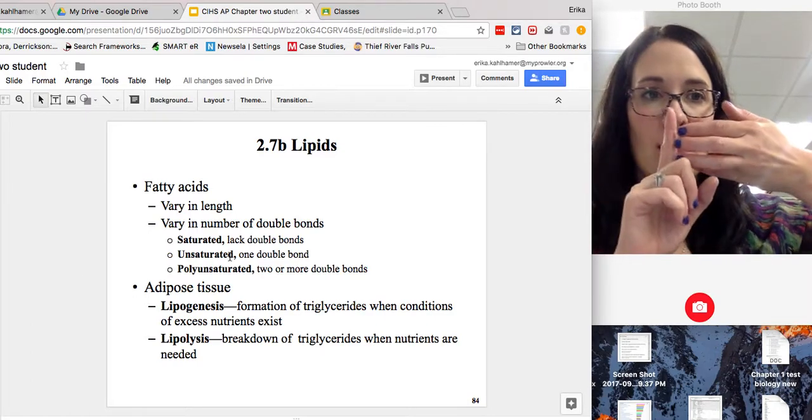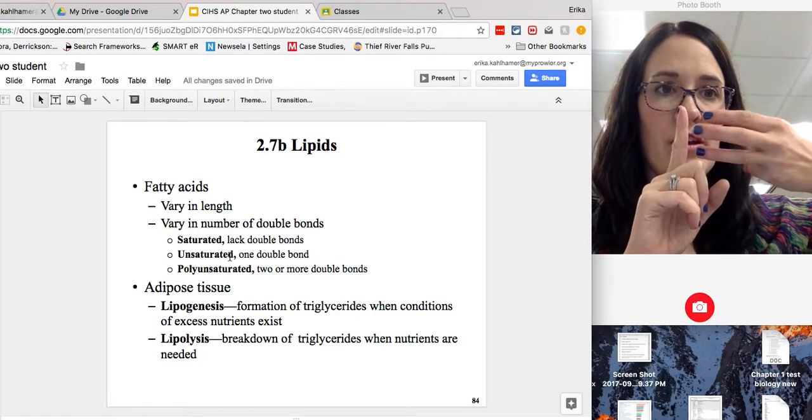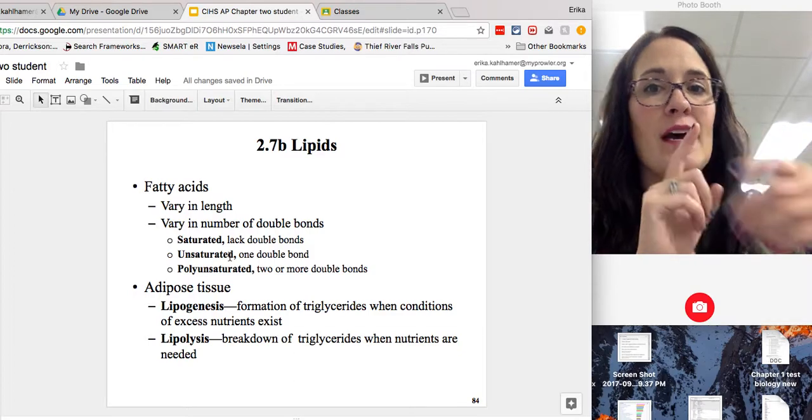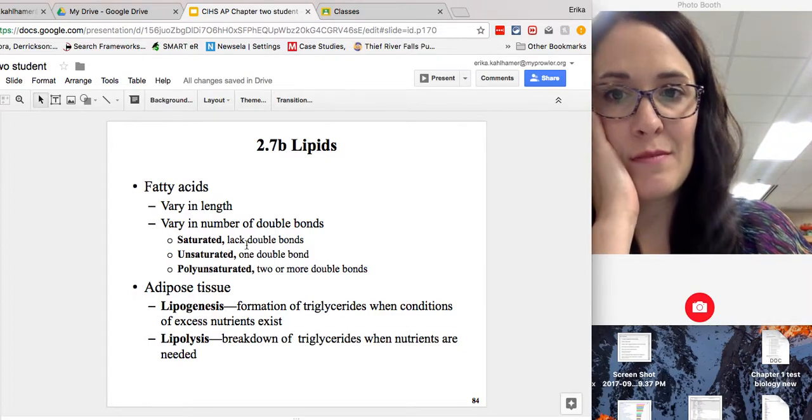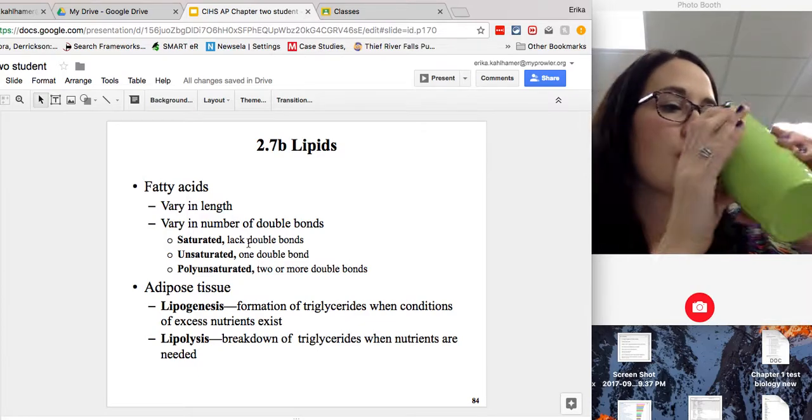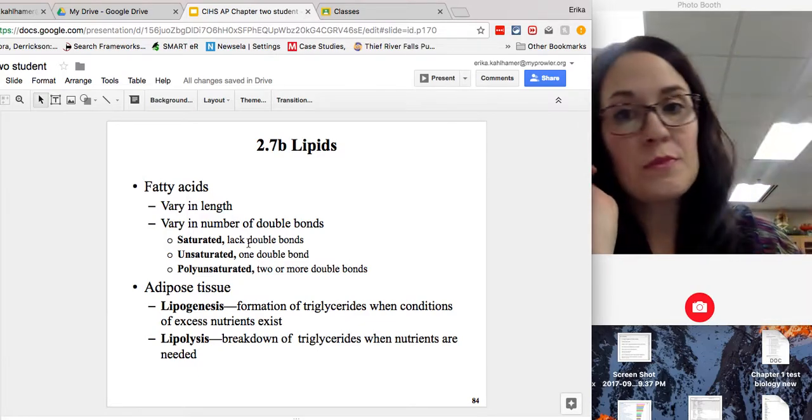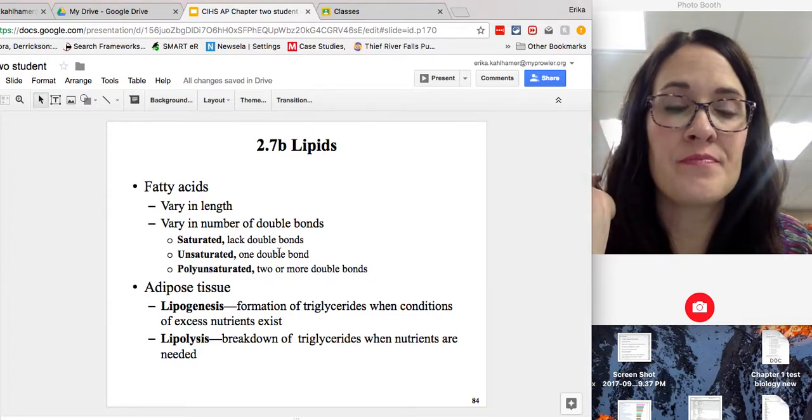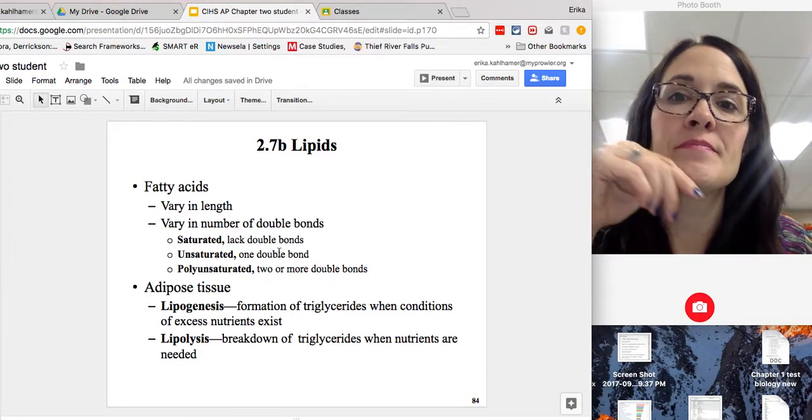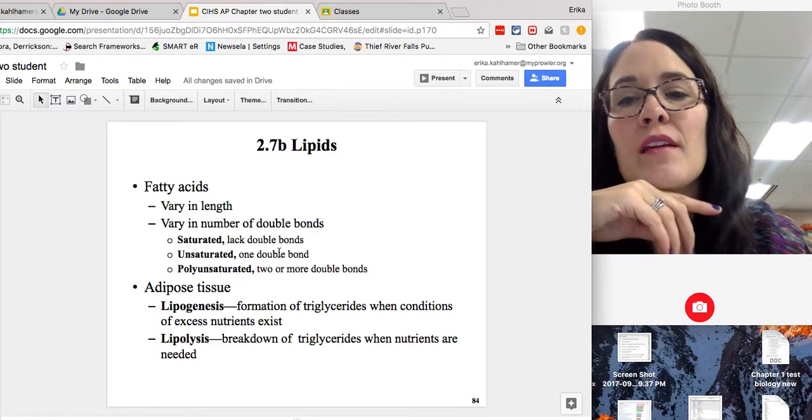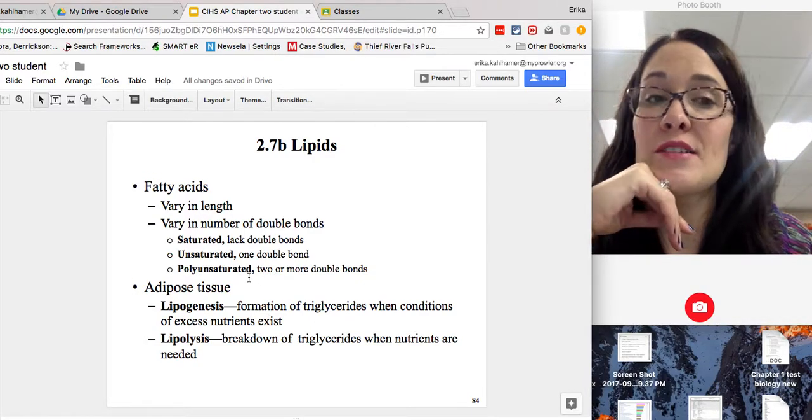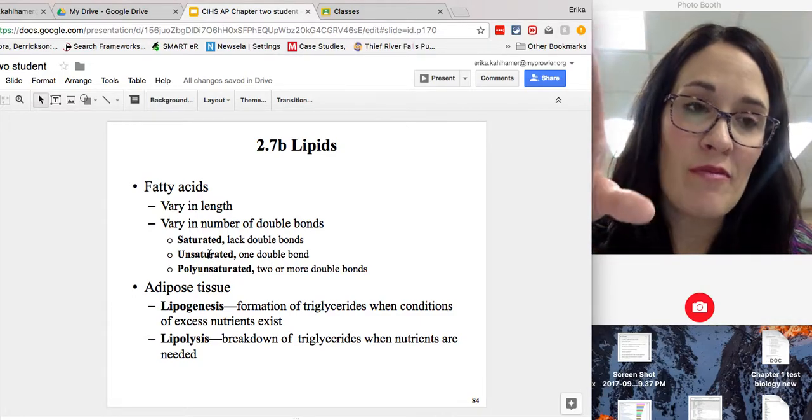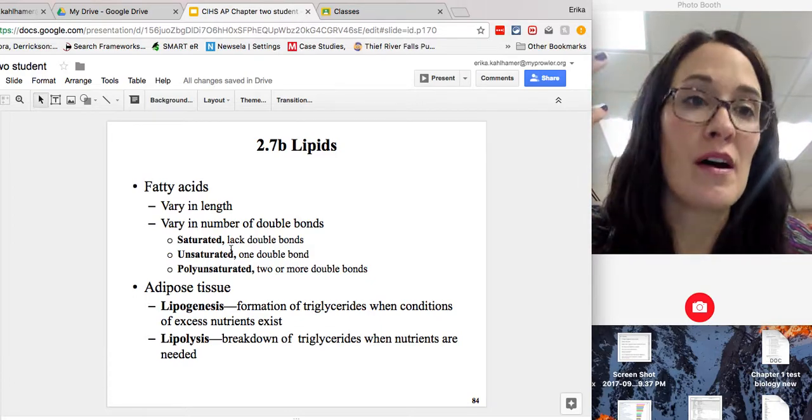Fatty acids. So these fingers over here are going to try glyceride. They vary in length. Some of these fatty acids can be saturated. They don't have double bonds. Unsaturated only has one double bond. So it's a little bit kinked. It bends a little bit. And polyunsaturated has two or more double bonds. So what type of fatty acid it is depends on bonding.